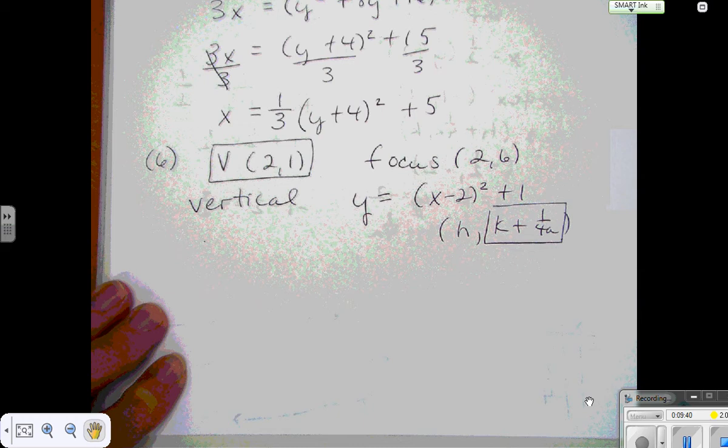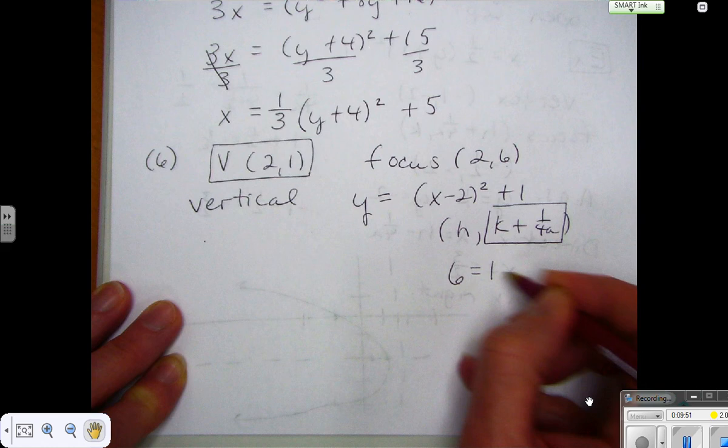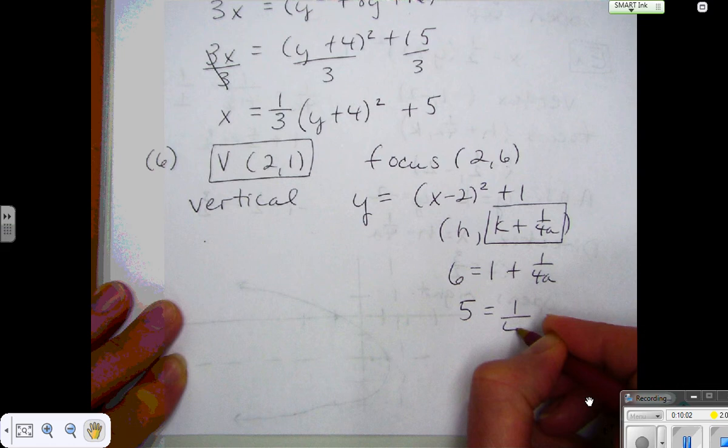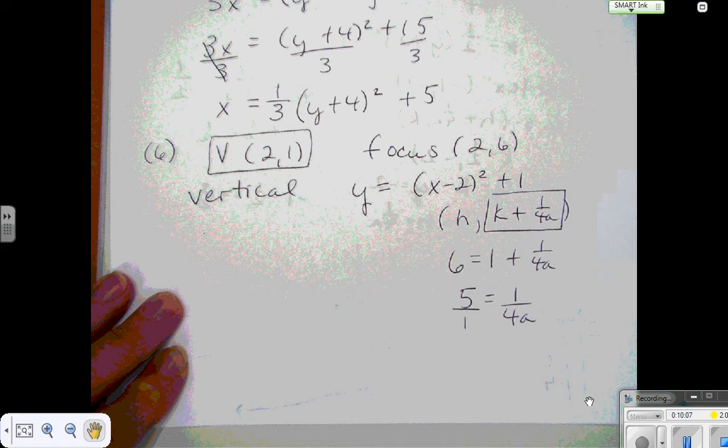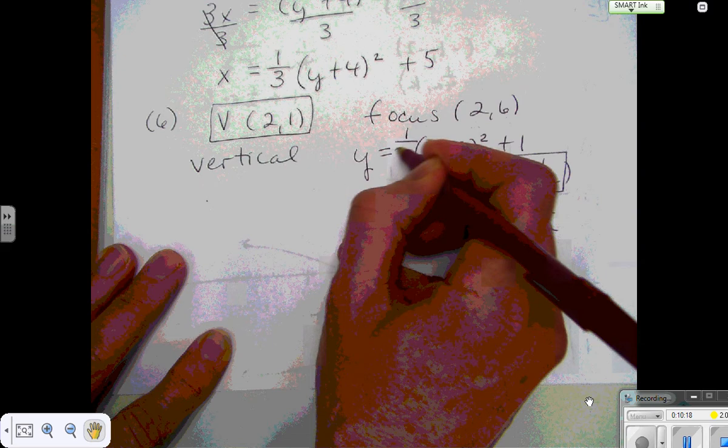Now I know that whenever I do this operation, it's going to equal 6 because that's the end product. So I'm going to set it up 6 equals k, which is 1, plus 1 over 4a. Okay, so I need to subtract the 1. 5 equals 1 over 4a, and I'm going to put that 5 over 1 so I can do my cross products. I have a proportion. So I get 20a equals 1. a equals 1 over 20. So now I have my a. I can put it in the equation where it belongs, and there's my parabola equation.